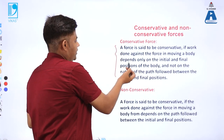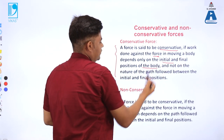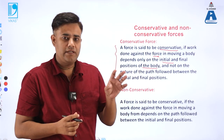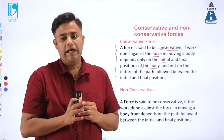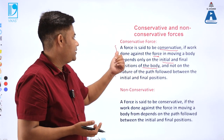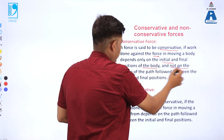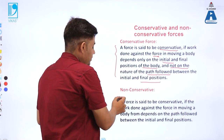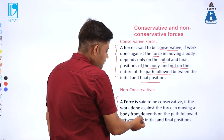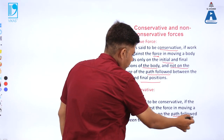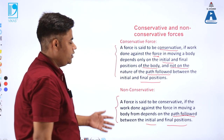A force is said to be conservative if the work done against the force depends only on the initial and final position of the body. The path that the body follows has no role to play in deciding the type of force. In the case of a non-conservative force, the work done depends upon the path followed and does not depend upon the initial and final position.